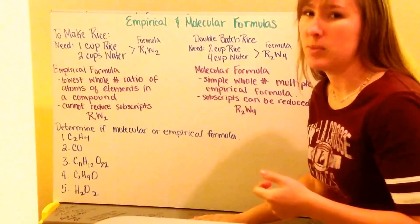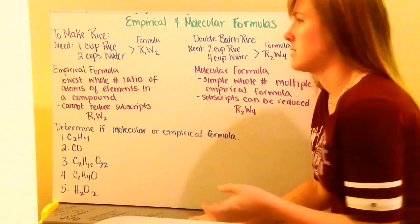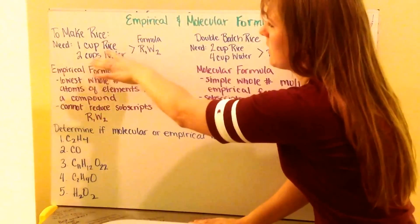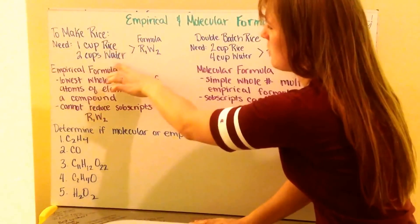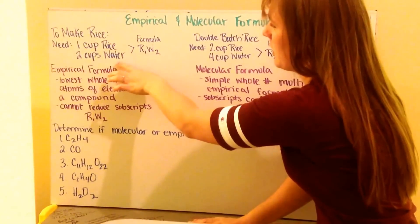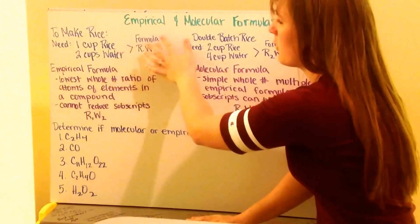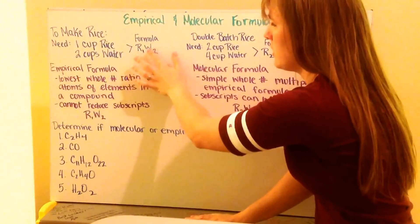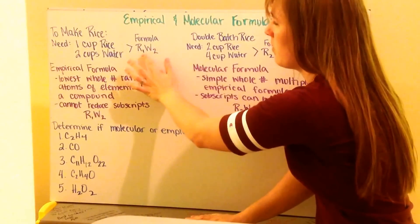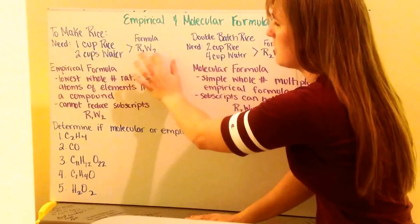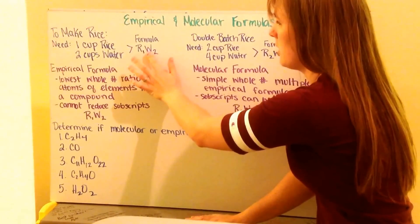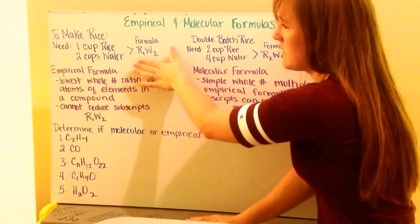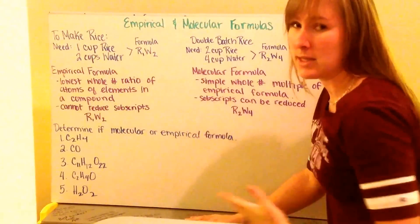We're going to use the example of making rice. To make rice, we need one cup of rice and two cups of water. So we can call the formula for making rice R1W2, for my one cup of rice and my two cups of water. If I want to double my recipe for rice,